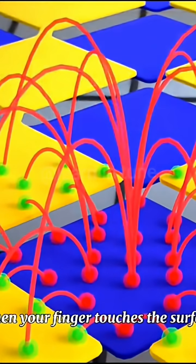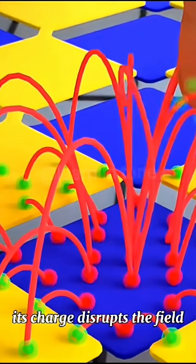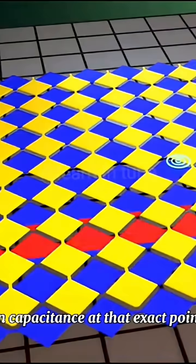When your finger touches the surface, its charge disrupts the field. Sensors in the grid detect this change in capacitance at that exact point.